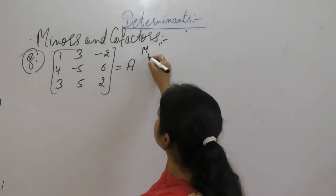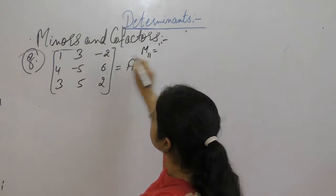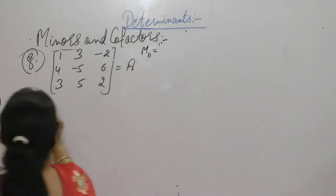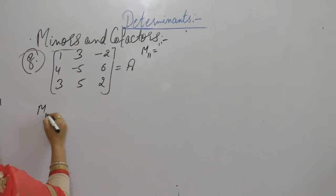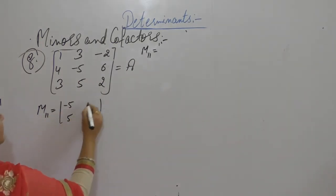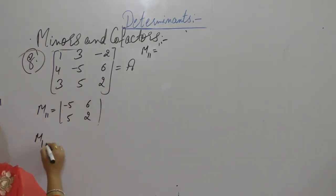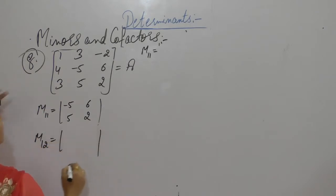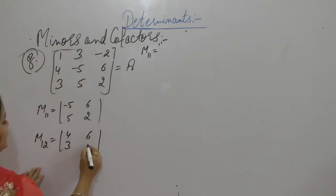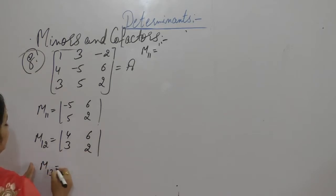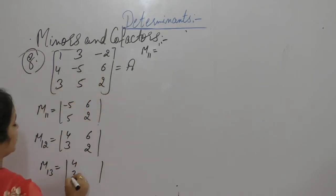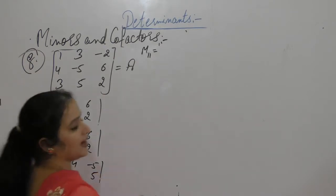M11: deleting first row and first column gives elements minus 5, 5, 6, 2. M12: deleting first row and second column gives 4, 3, 6, 2. M13: deleting first row and third column gives 4, 3, minus 5, 5.